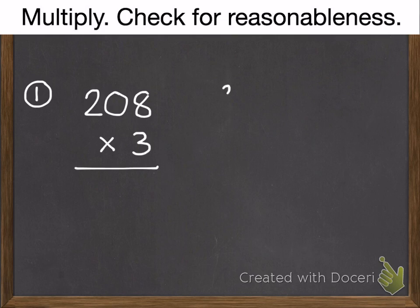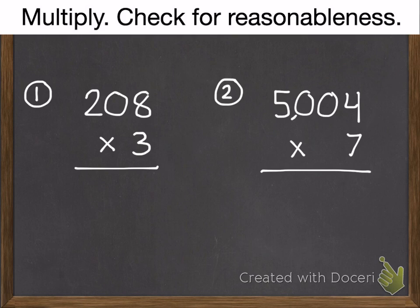And here are two problems that we'll check in class tomorrow. One in the hundreds, one in the thousands. Number one is 208 times 3. Number two is 5,004 times 7. Multiply those and check for reasonableness. And we'll check them in class tomorrow.